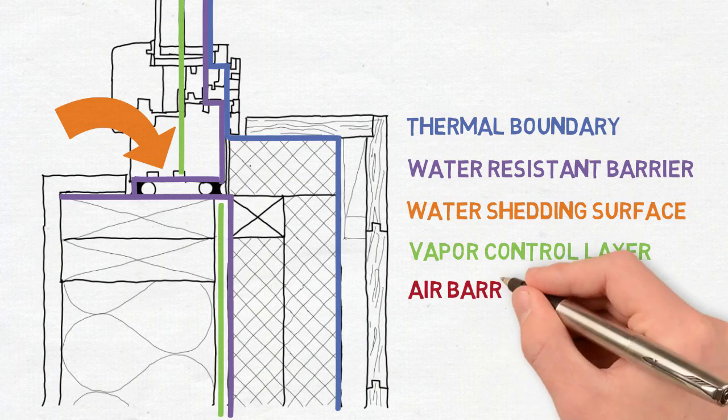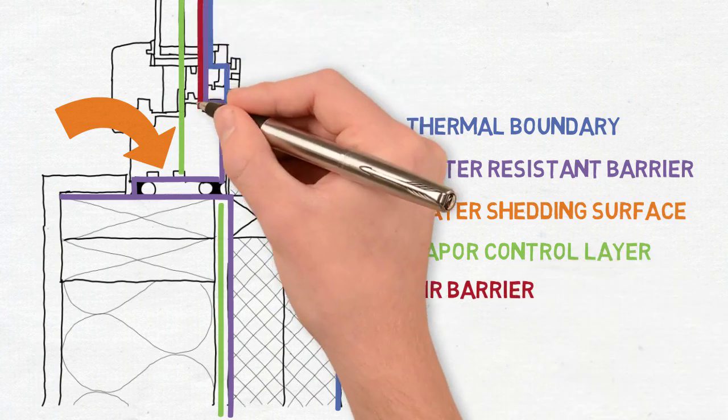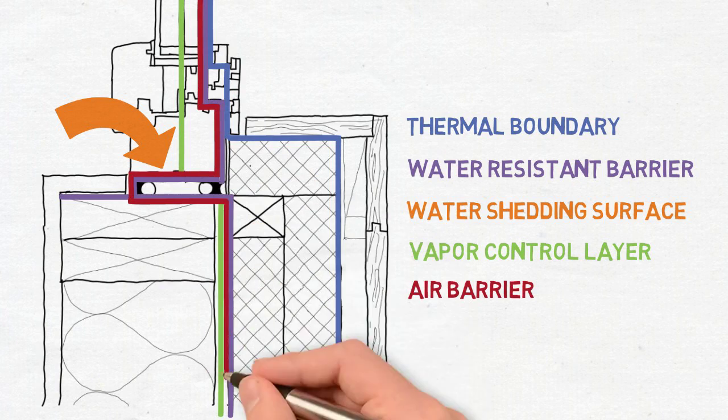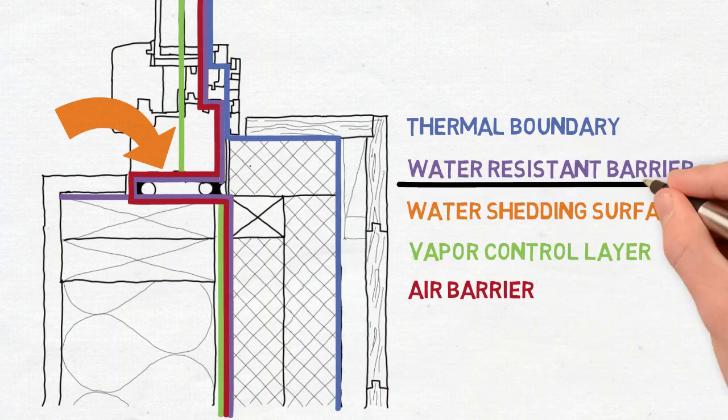The air barrier is coming down the window and going back to the second sealant and going down behind the exterior insulation, same as the water resistant barrier.